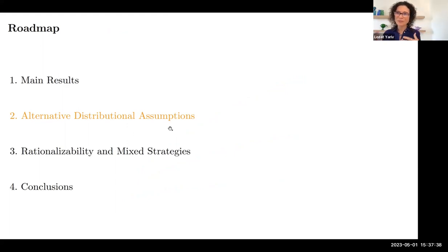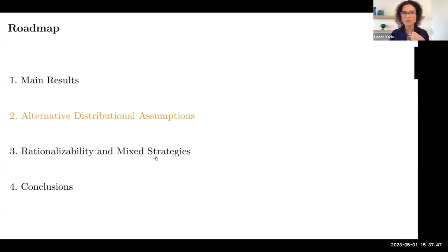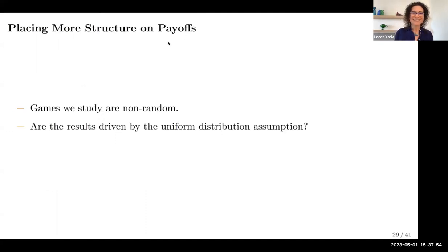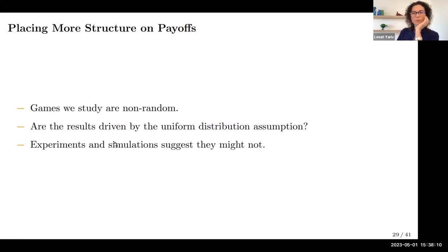These are the main results. Now I'd like to give you a sense of where things can be relaxed — both in terms of the distribution of preferences and in terms of the notion of dominance. The games we often study are clearly not random, so we want to understand whether the results are really driven by the uniform distribution assumption. Both experiments and simulation suggest they might not be.